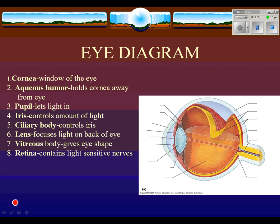Number eight is the retina, shown in yellow at the back of the eye. The retina is superiorly important — it contains the light-sensitive nerves. We'll spend more time on the retina in a future class. You may have heard of a detached retina, where it pulls away from the back of the eye. Mr. Annen actually had a detached retina from getting hit with a paintball. It's a very serious injury — he had to lay face down for about two weeks to let the retina heal.